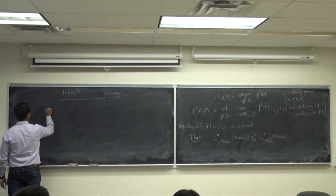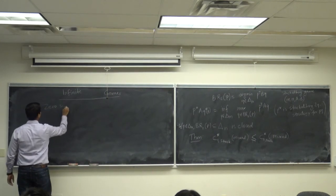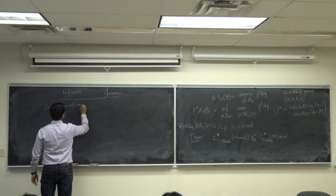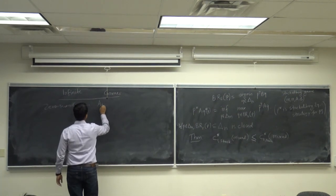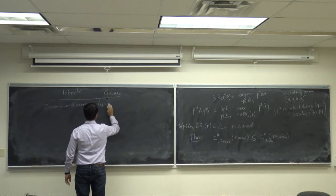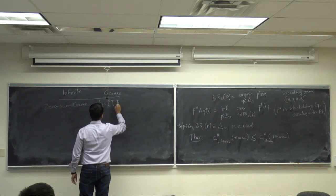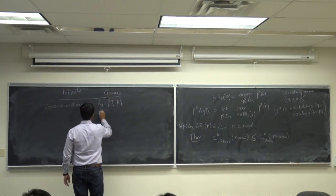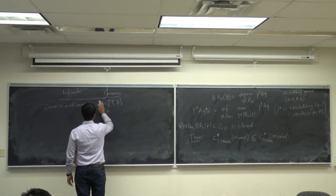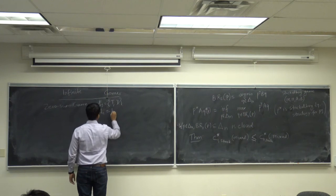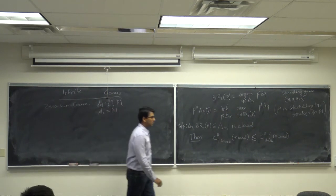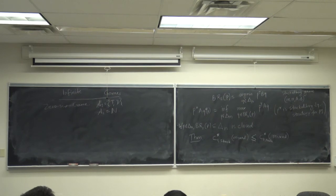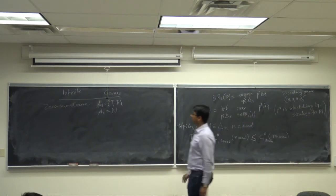I have a zero-sum game. Player one's action set A1 = {Top, Down} and player two's action set A2 = the natural numbers.